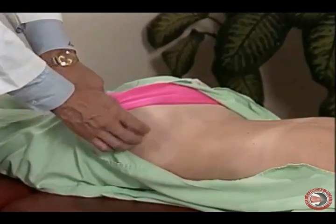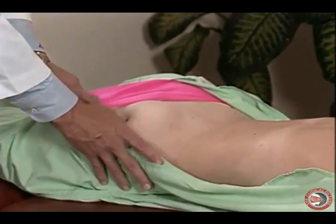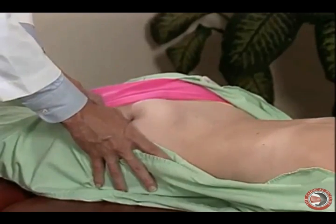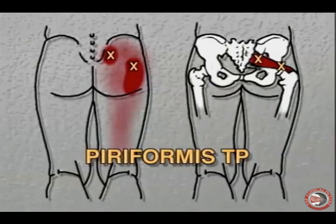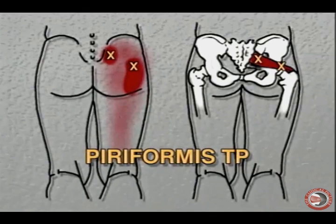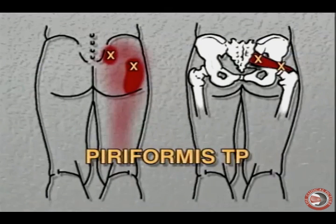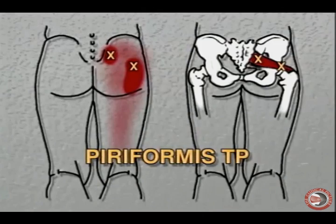Then there are the gluteal muscles in the buttock — we look at the gluteus medius and minimus for trigger points, which will refer pain into the lower leg. Finally, the piriformis muscle, located in the belly of the buttock — upon deep palpation, a trigger point will refer pain into the lower extremity and can mimic an S1 radiculopathy or possibly a sacroiliac joint dysfunction.